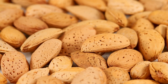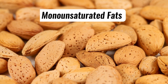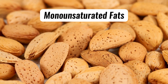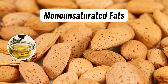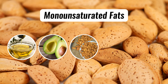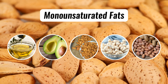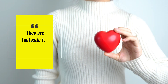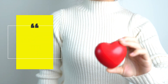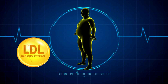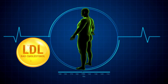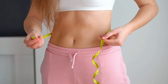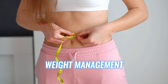First up, let's talk about good fats: monounsaturated fats. These fats can be found in olive oil, avocados, and nuts like almonds, cashews, and peanuts. They are fantastic for heart health, as they help reduce bad cholesterol levels and increase good cholesterol levels. Plus, they can aid in weight management.